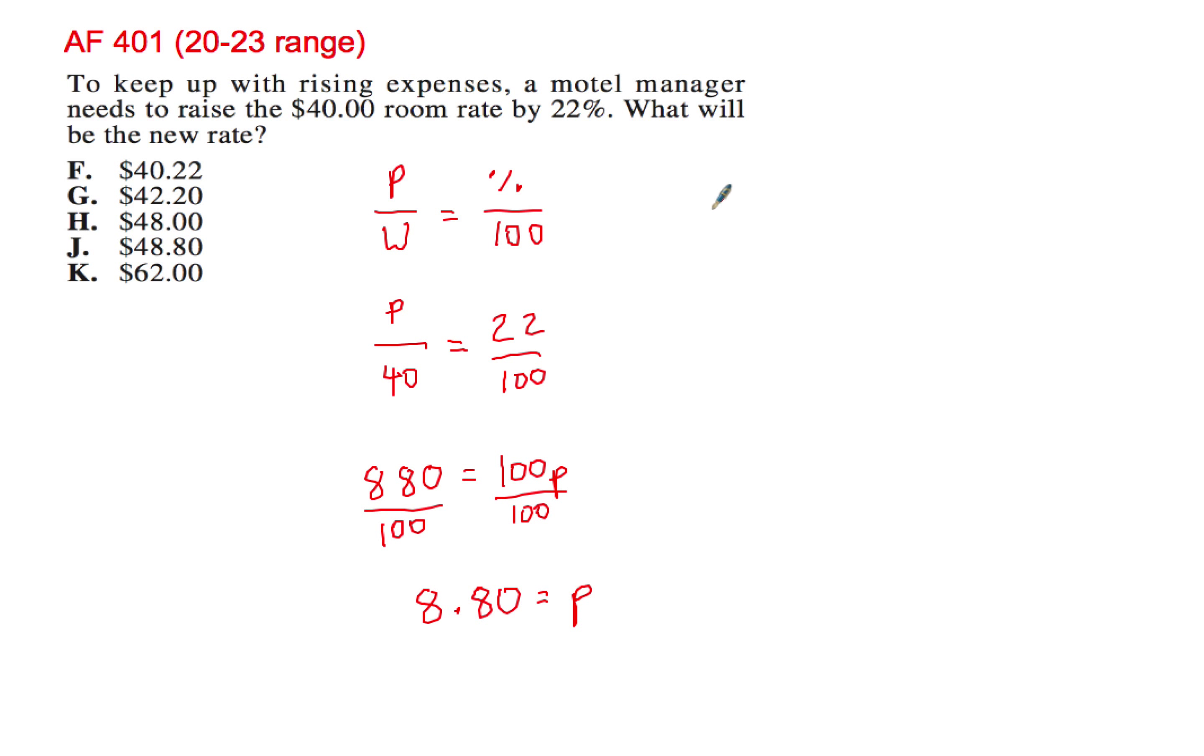$8.80 represents what the room went up by. So if a room that's $40 goes up by $8.80, then your answer is $48.80. Boom, right there.